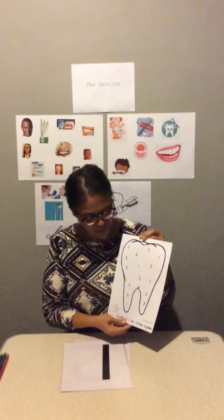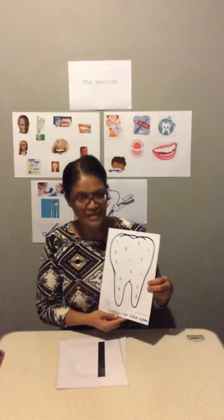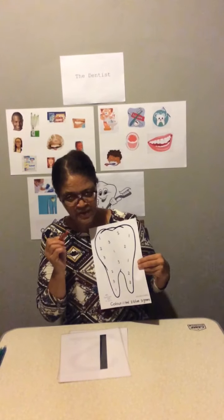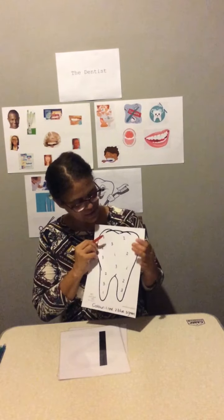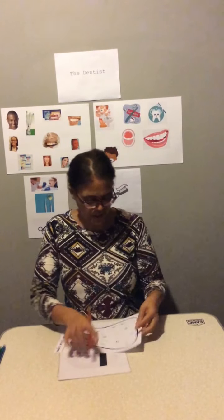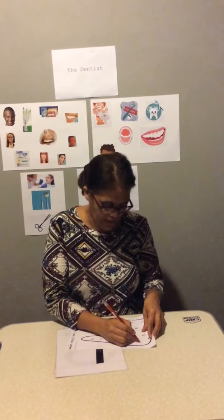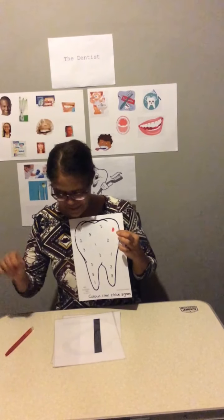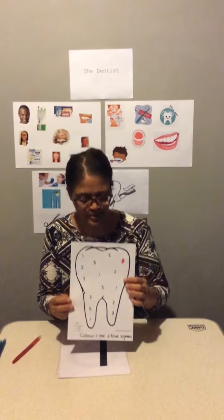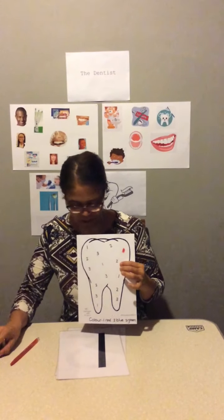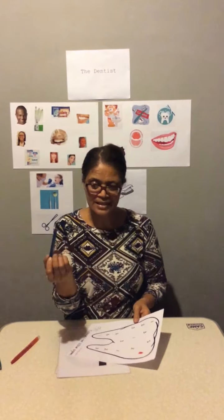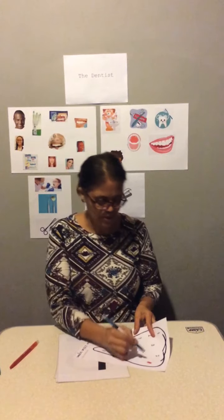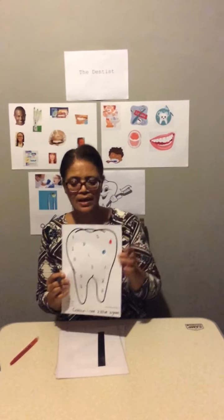So today we are going to colour in the numbers. We are going to colour the number 1 with your red colour. All the number 1s we are going to colour red. Number 2, number 2, we are going to colour blue. What colour is this? Blue. All the number 2s we are going to colour blue.